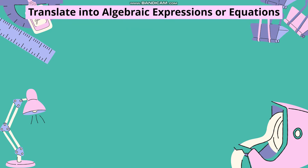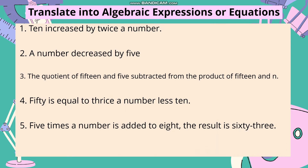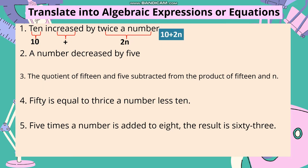Translate into algebraic expressions or equations. Number 1: '10 increased by twice a number.' In symbol, we write 10. 'Increased' means plus. 'Twice a number' in symbol is 2n. Putting it all together, our mathematical symbol is 10 plus 2n.